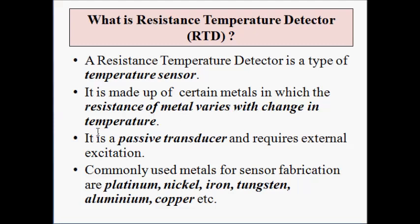RTDs are passive transducers. It means they require an external voltage supply for their operation. They are not self-generating and cannot generate their own voltage. They only respond by a change in resistance. That change in resistance is converted into a change in voltage with the help of an external voltage supply and a signal conditioning circuit.